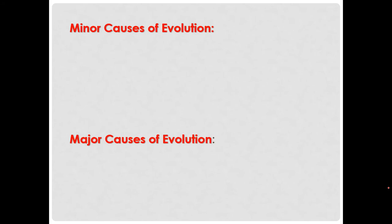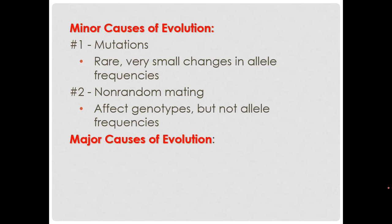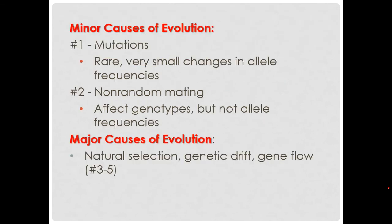Reminders of what causes evolution: mutations cause changes in allele frequencies. Non-random mating is a minor cause — if individuals prefer red flowers, that affects whether white flowers get to mate, changing genotype frequencies but not allele frequencies themselves. Major causes of evolution are natural selection, genetic drift, and gene flow. Natural selection is when individuals with certain adaptations are better suited to the environment and more likely to survive and reproduce. Genetic drift mainly affects small populations — it's just random fluctuations in allele frequencies from one generation to another as a result of random chance.